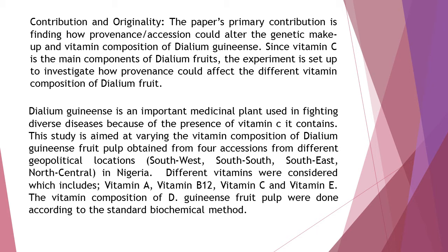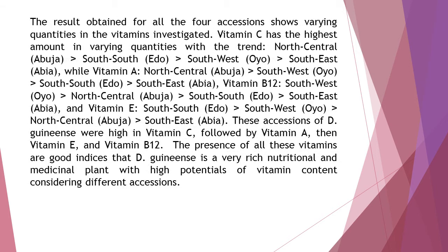The vitamin composition of D. guineense fruit pulp was determined according to standard biochemical methods. The results obtained for all four accessions show varying quantities in the vitamins investigated. Vitamin C has the highest amount and varying quantities with the trend: north-central (Abuja), south-south (Edo), southwest (Oyo), southeast (Abuja).